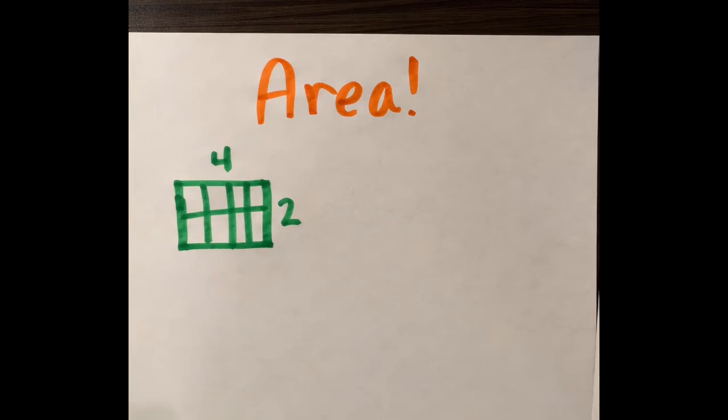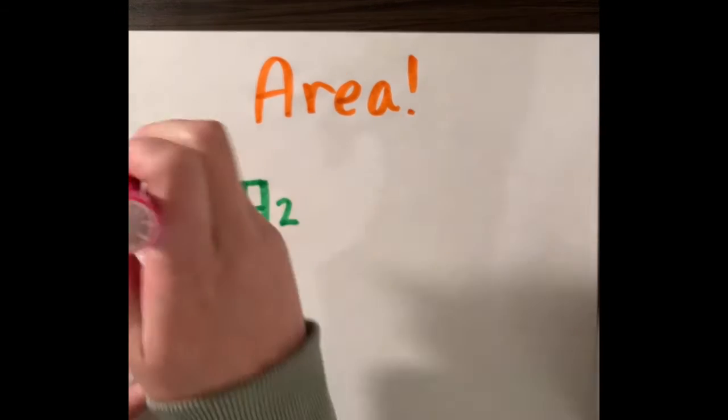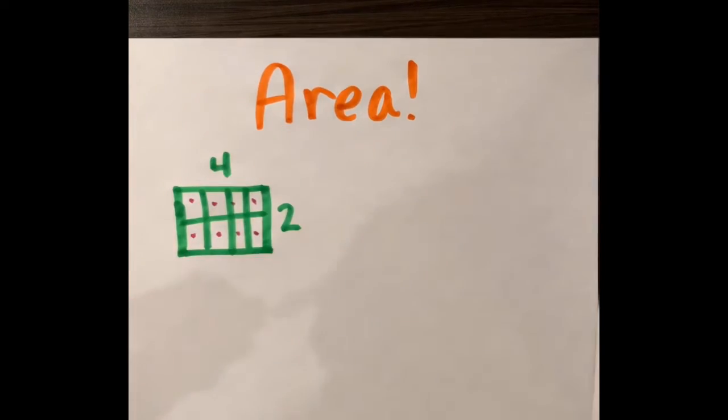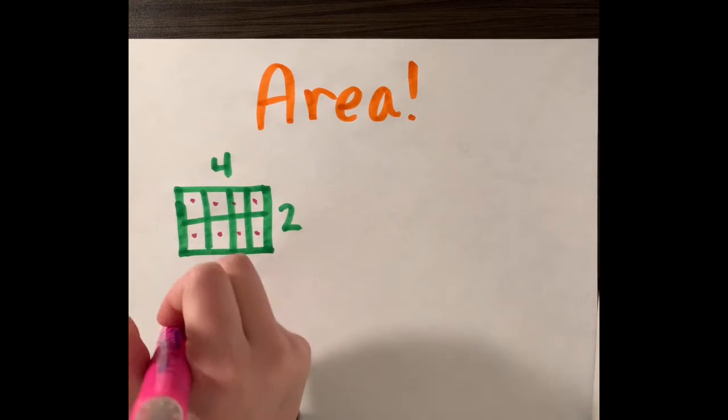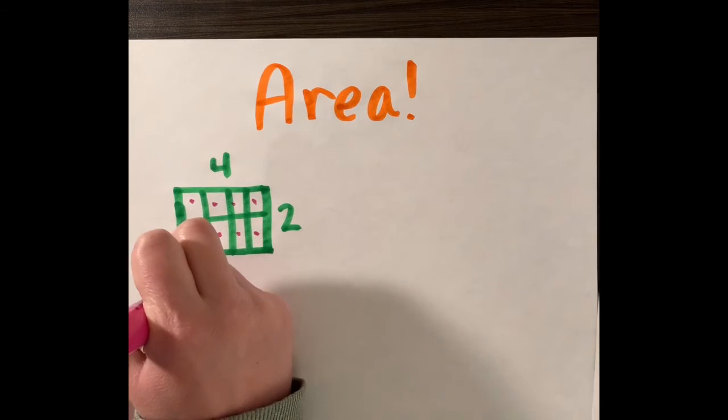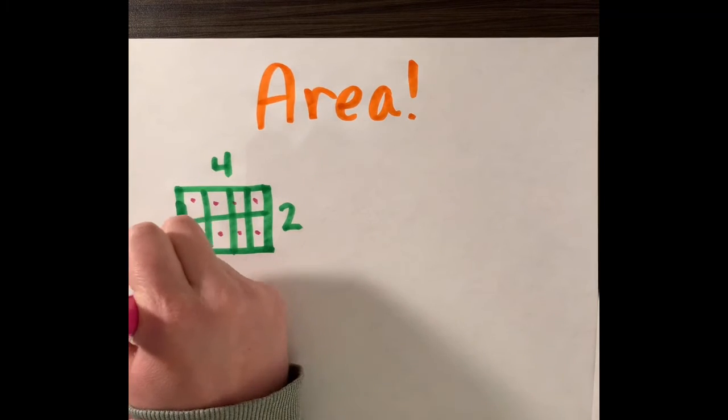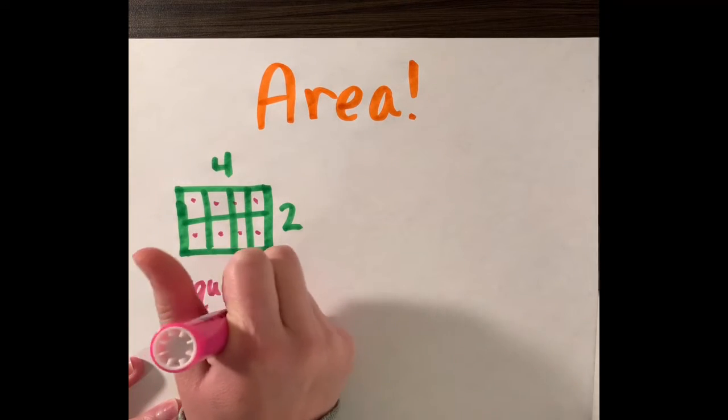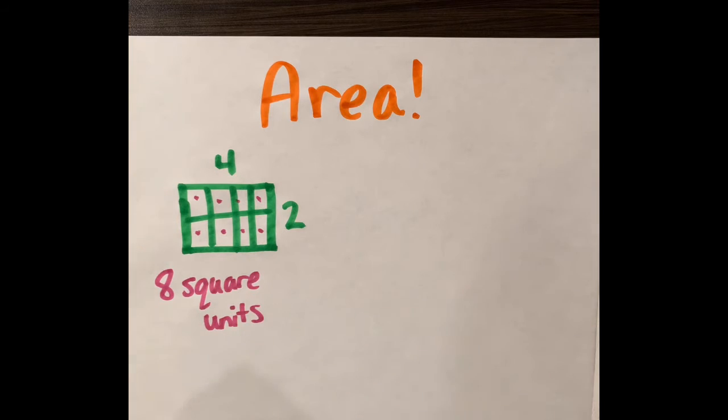Right now I'm taking a different colored marker and I'm going to count each square. Let's count them: one, two, three, four, five, six, seven, and eight. So my area is eight square units. Don't forget the label—that's very important when you are working with area, perimeter, or volume, any type of measurement.